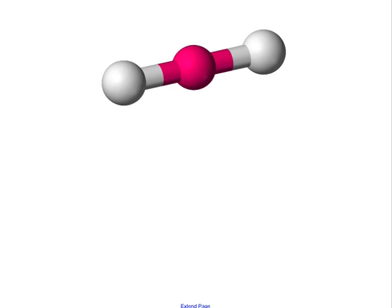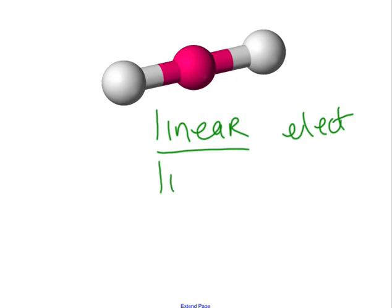So this is what family do you think? What does it look like? It's linear. Two areas is linear. Because all the areas are bonded, its electronic structure is the same as its geometry. Now what we also want to look at is the bond angle. Take a look at your model. What's the bond angle between that and that? 180. All linear stuff is 180.